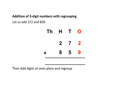Then, add digits at 1's place and regroup. That is, 2 plus 9 is equal to 11 ones, or 11 ones is equal to 1 ten plus 1 one.